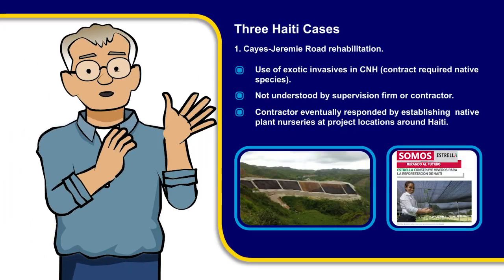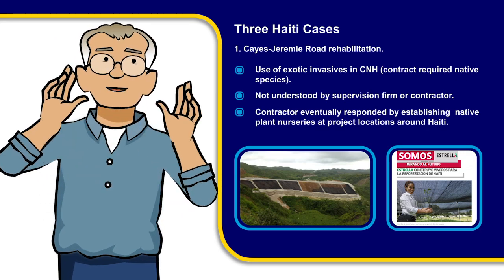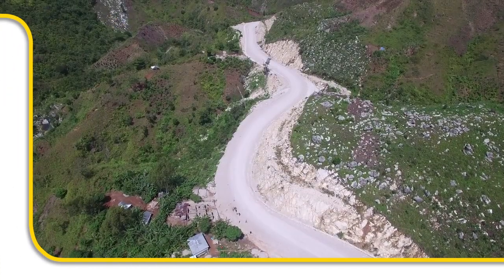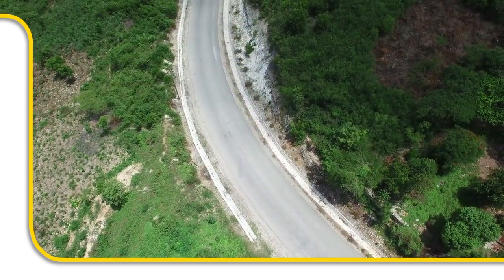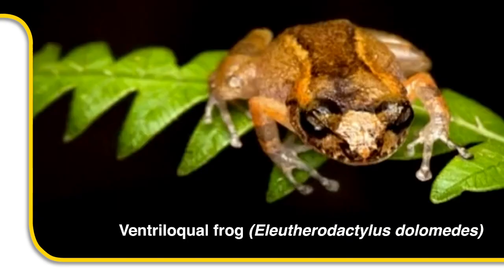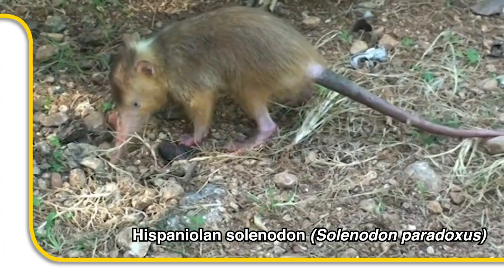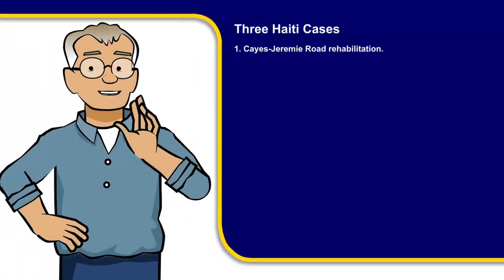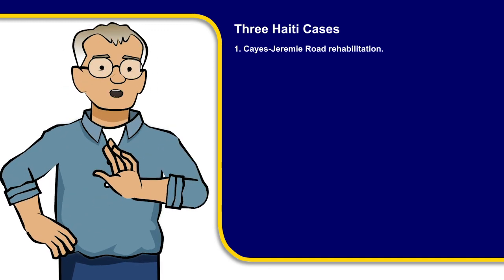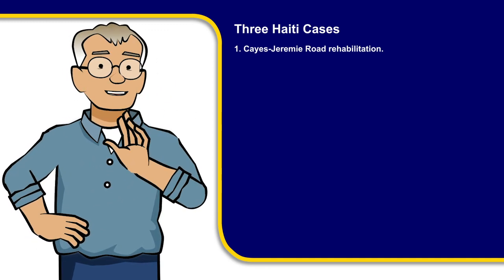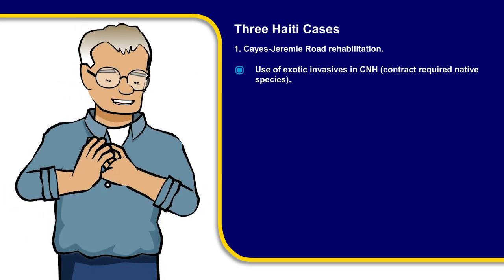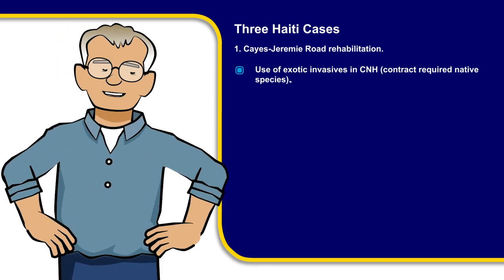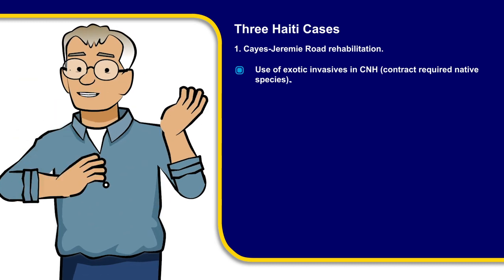The Kai Jeremie Road Rehabilitation Project in the southwest of the country is a 50-kilometer road linking two towns that passes through the buffer zone of a national park in southwest Haiti. This mountainous area is home to many endemic frogs and some rare mammal species too. Slope stabilization using plants has been a major part of the project mitigation and restoration. Initially, the contractor chose exotic invasive species for this, even though the contract specified native species and the project takes place in critical natural habitat.